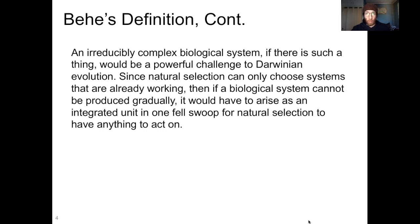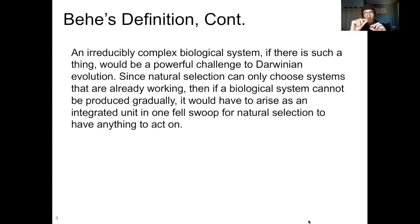So what Behe is saying here is: if you cannot build a biological system — pick whatever system you want — little bit by little bit, continuously increasing the function as you go, then that system cannot evolve via Darwinian evolution. Now, there are a bunch of problems here, and I promise you we're going to get into them.